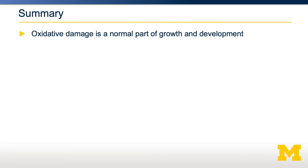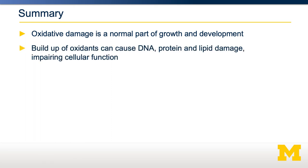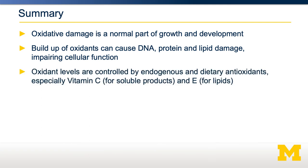In summary, oxidants are generated intentionally — this is a normal part of growth and metabolism and is important for both muscle adaptations and immune function. However, a buildup of oxidants can cause DNA damage, protein damage, and lipid damage, resulting in impaired cellular function. Therefore, oxidant levels must be tightly controlled by two systems: an endogenous system containing catalase, superoxide dismutase, and glutathione peroxidase, and a dietary antioxidant system, especially vitamin C and vitamin E.